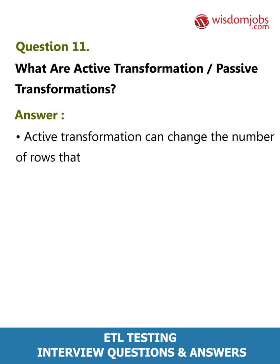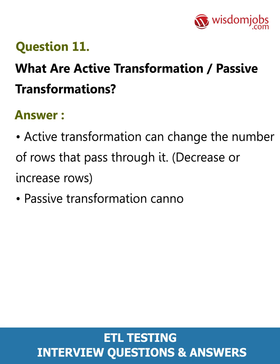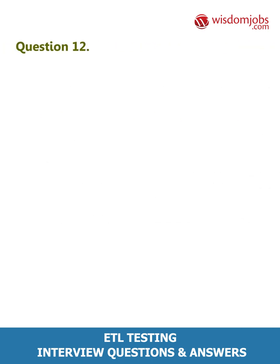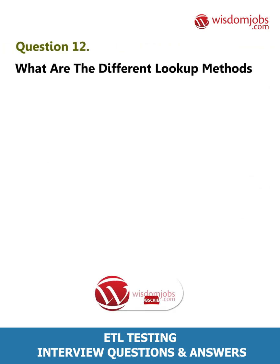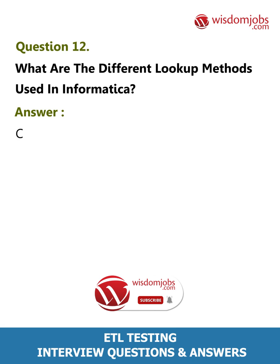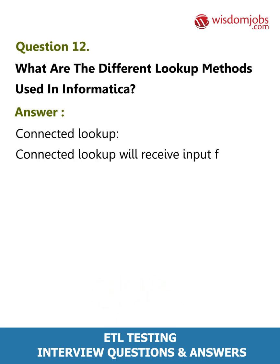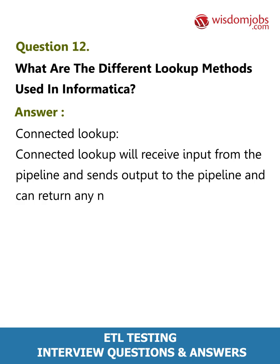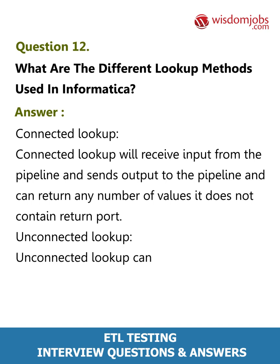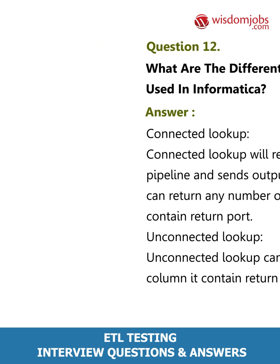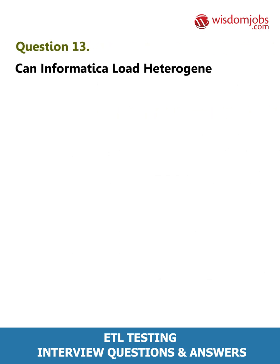Question 11: What are active transformations and passive transformations? Answer: An active transformation can change the number of rows that pass through it — it can decrease or increase rows. A passive transformation cannot change the number of rows that pass through it. Question 12: What are the different lookup methods used in Informatica? Answer: Connected lookup — receives input from the pipeline and sends output to the pipeline; can return any number of values and does not contain a return port. Unconnected lookup — can return only one column and contains a return port.